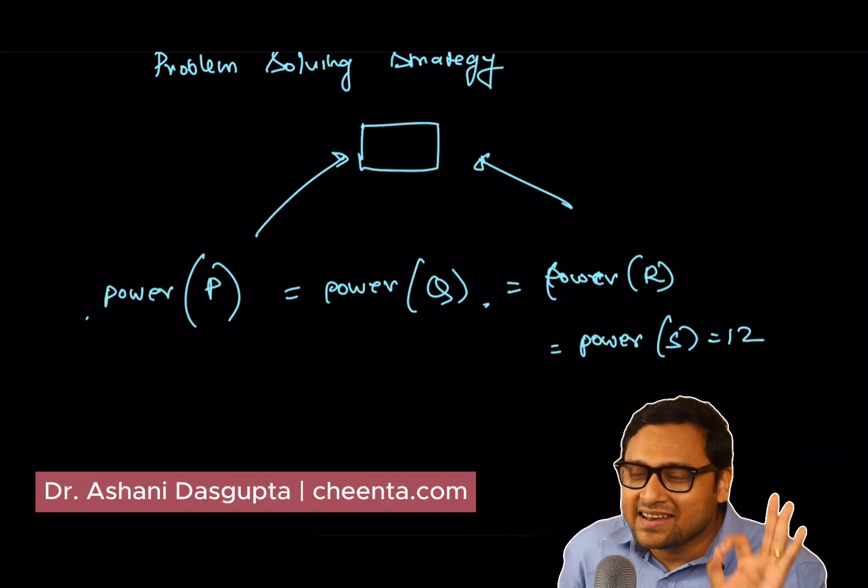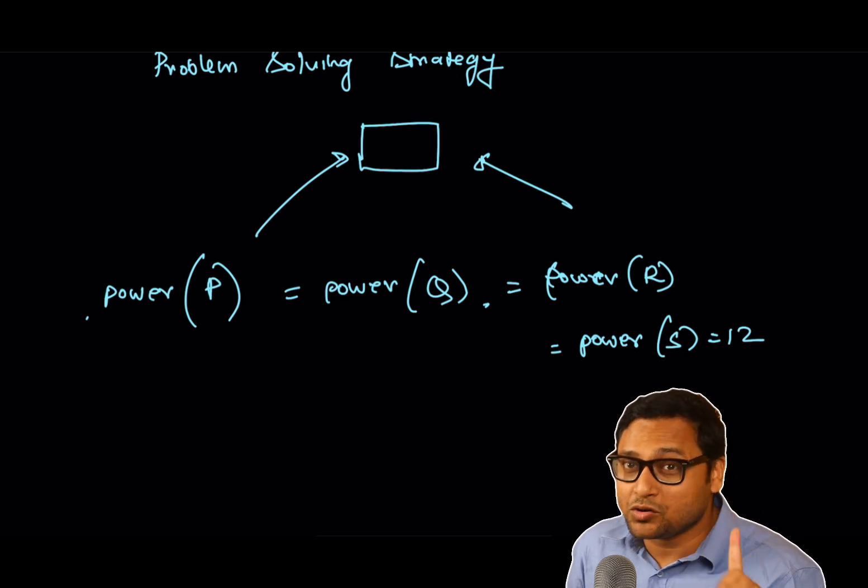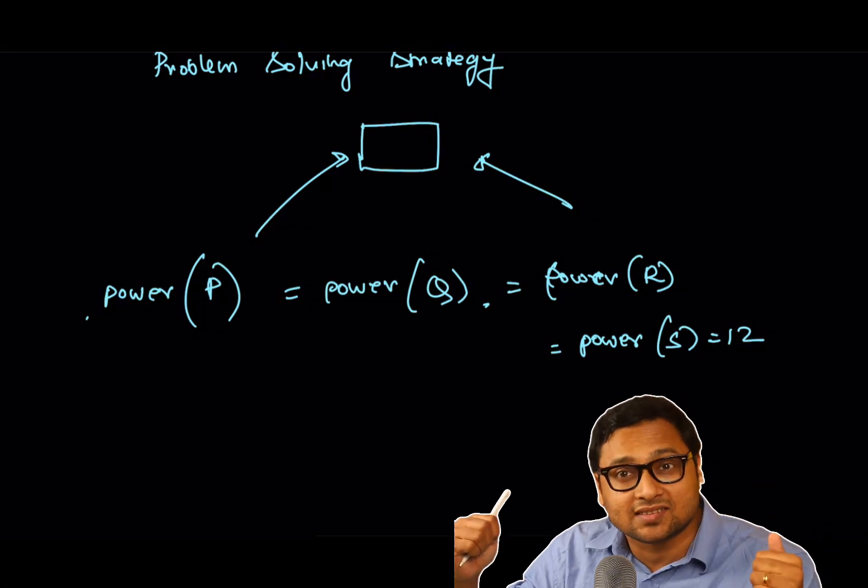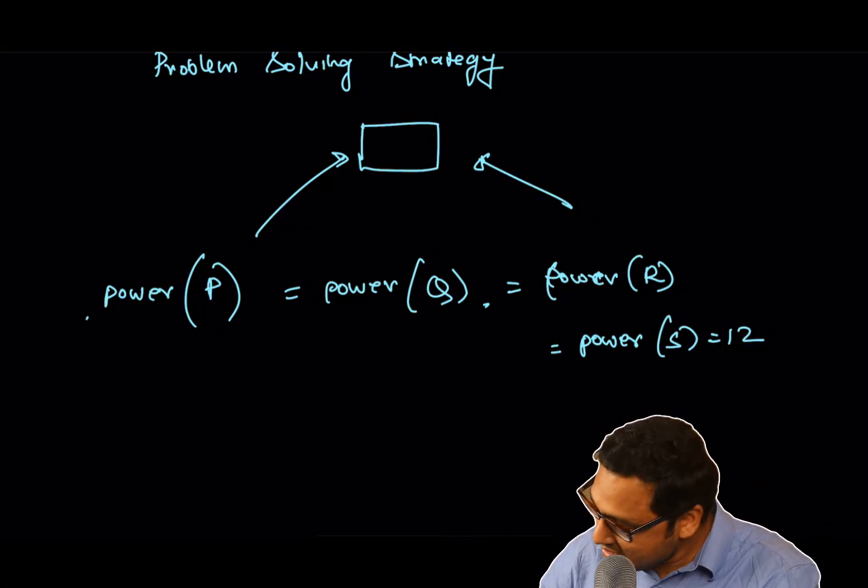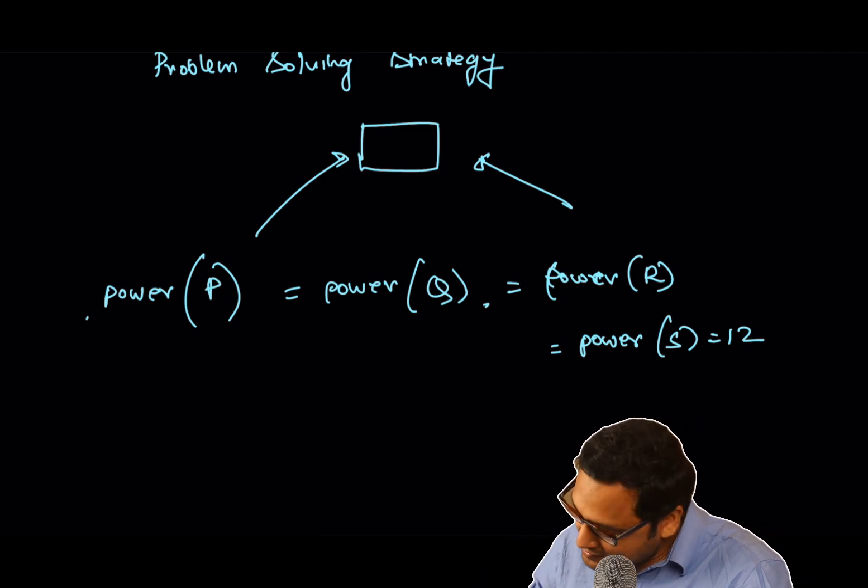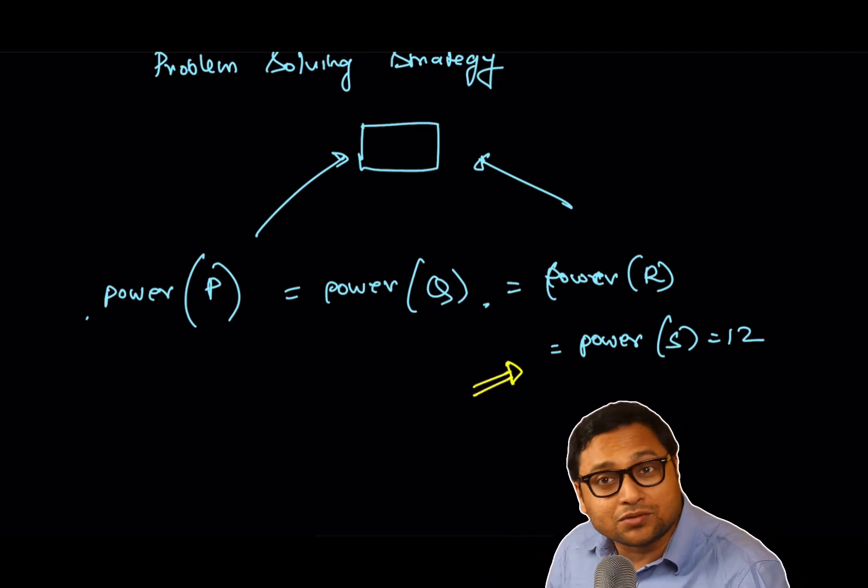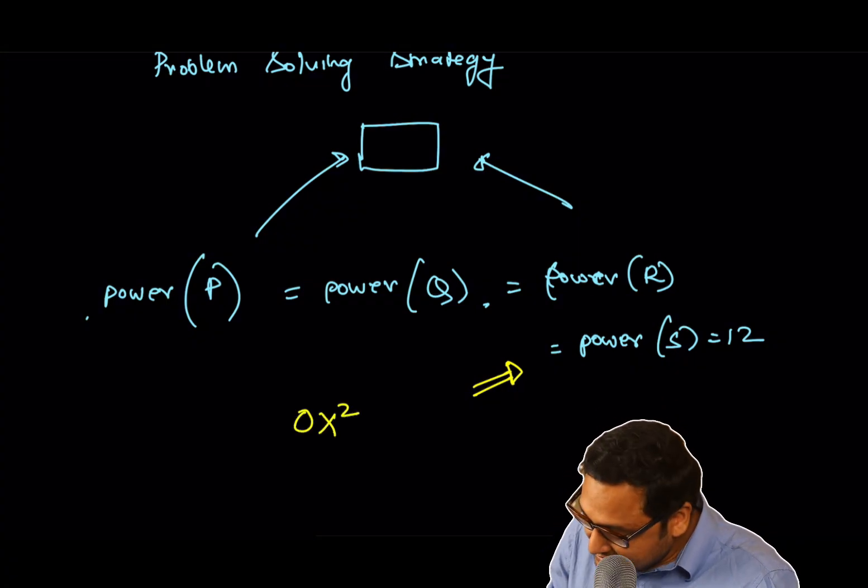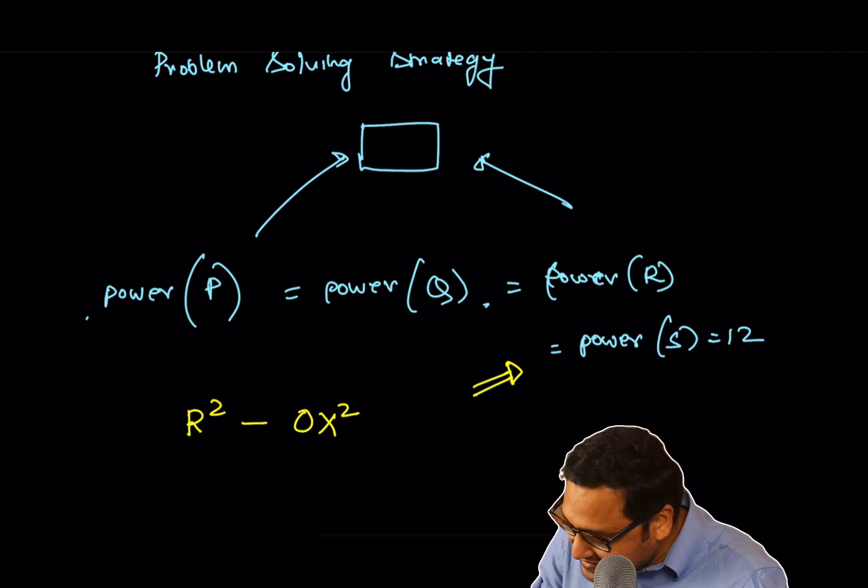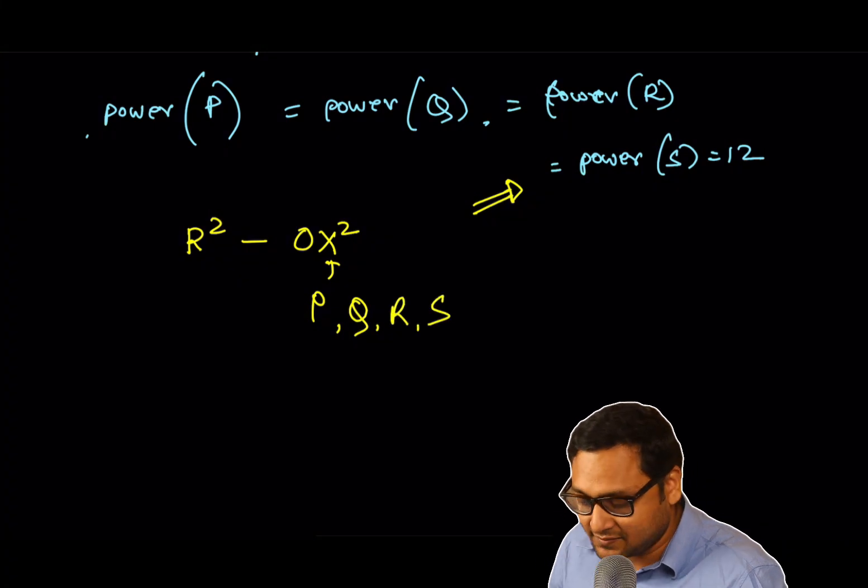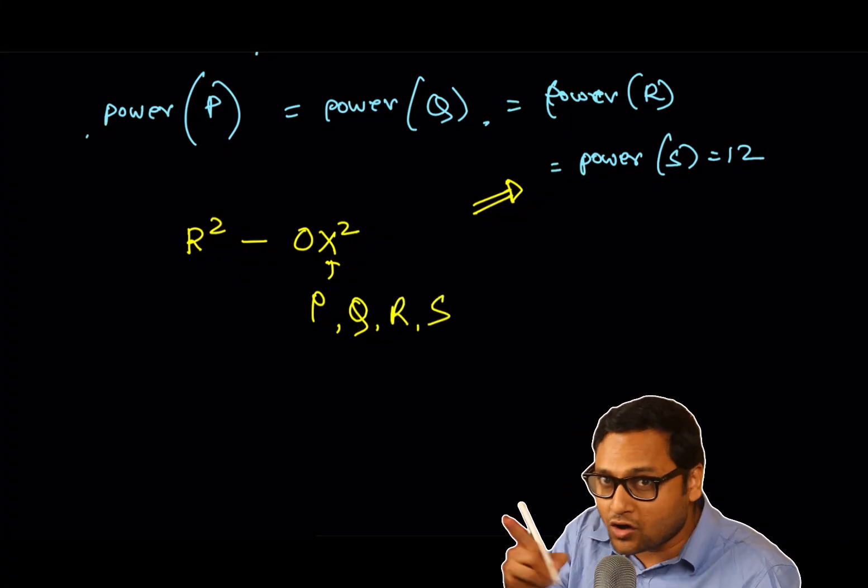We are at the final leg of the problem. Remember I told you, look at the same concept from two different directions. Let's do it now. We will use the second definition of the power of the point. We will say, okay, this is equal to the distance of the point from the center subtracted from the radius of the circle. Here, X is P or Q or R or S. All four of them will satisfy this.